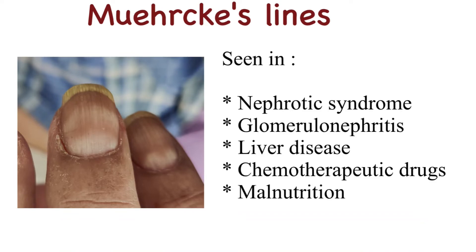Muehrcke's lines can be seen in nephrotic syndrome, glomerulonephritis, liver diseases, certain chemotherapeutic drugs, and malnutrition.